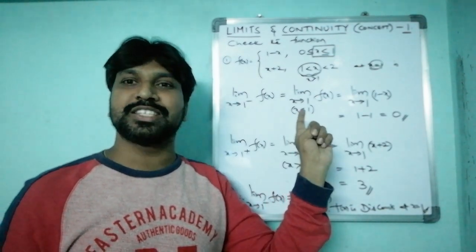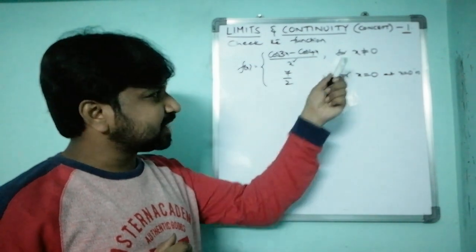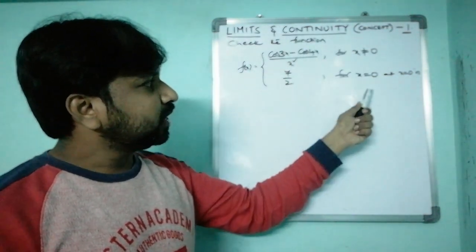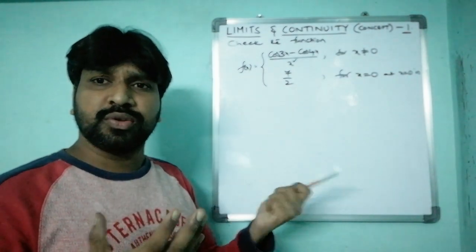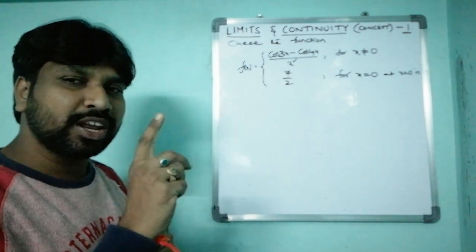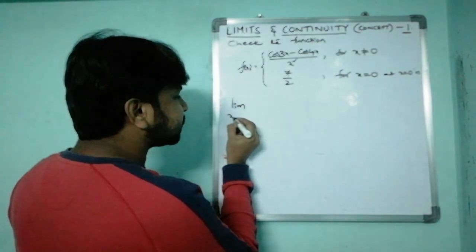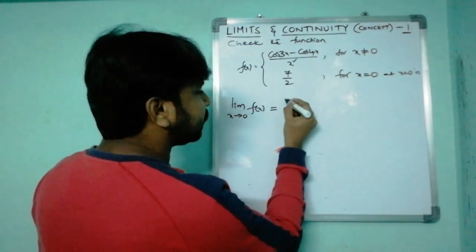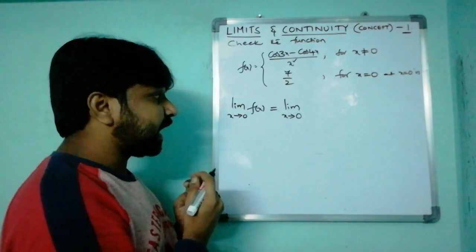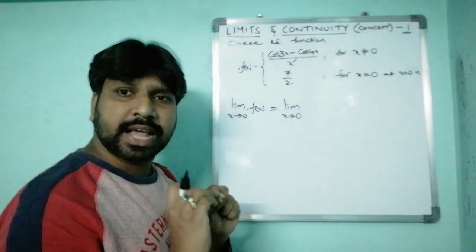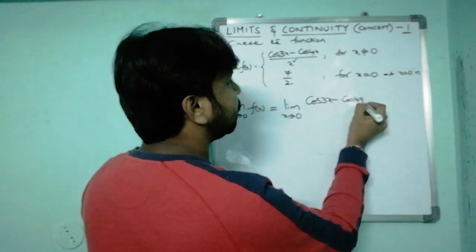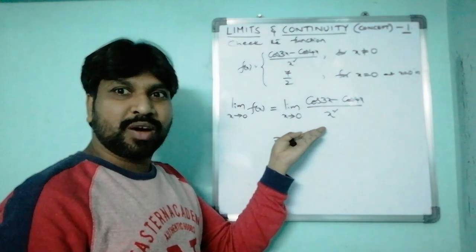Now for a Type 2 example. The function uses 'not equals to' and 'equals to' symbols, so this is Type 2. The question asks: check whether f(x) is continuous or discontinuous at x = 0. For Type 2, find limit x→0 of f(x) and f(0). Since x tending to 0 means x ≠ 0, we use the piece f(x) = (cos3x − cos4x) / x².